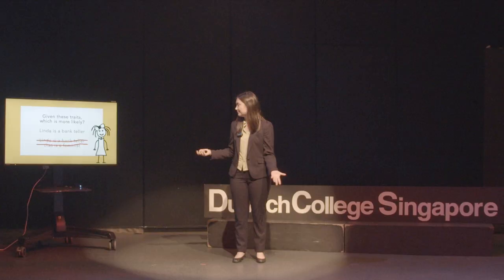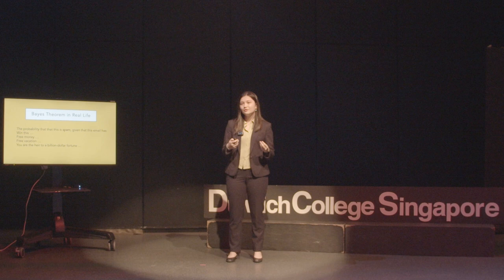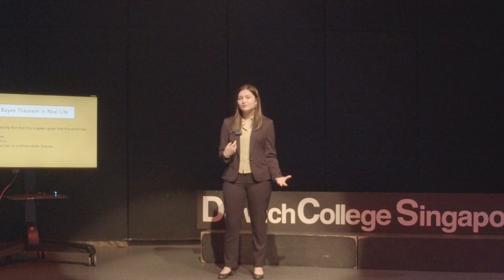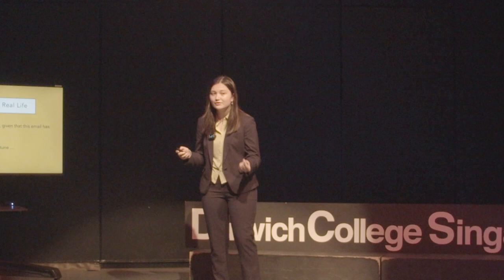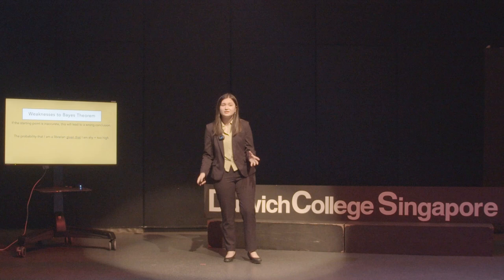Zooming out a bit — Bayes theorem can actually be used in spam filters in your emails, which is really interesting. Remember how I phrased Bayes theorem as 'the probability of something given that something else'? Pretend you're an algorithm searching for spam. What's the probability that this email is spam given that it contains phrases like 'win this free money,' 'free vacation,' or 'you're the heir to a billion dollar fortune'? You'd say the probability is pretty high — and this is exactly how Bayesian algorithms work; they automatically put the message in spam.